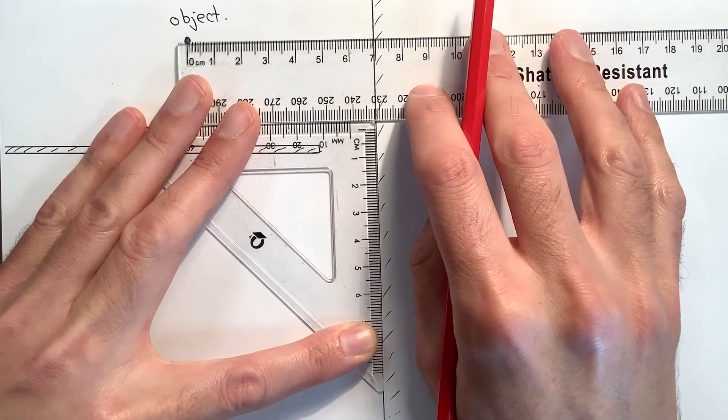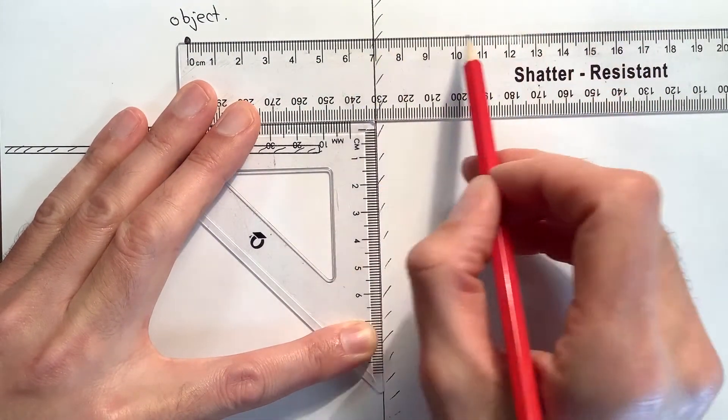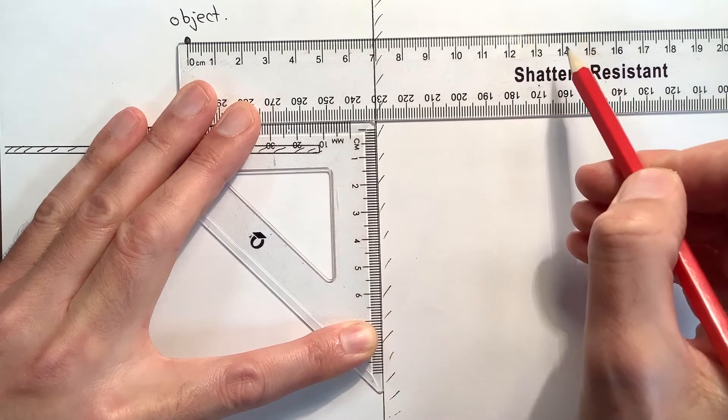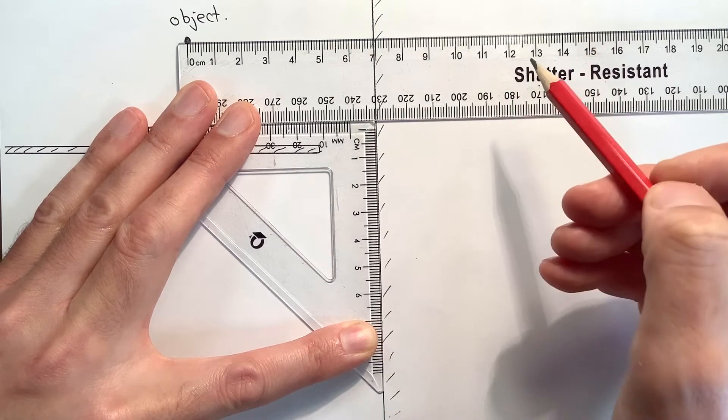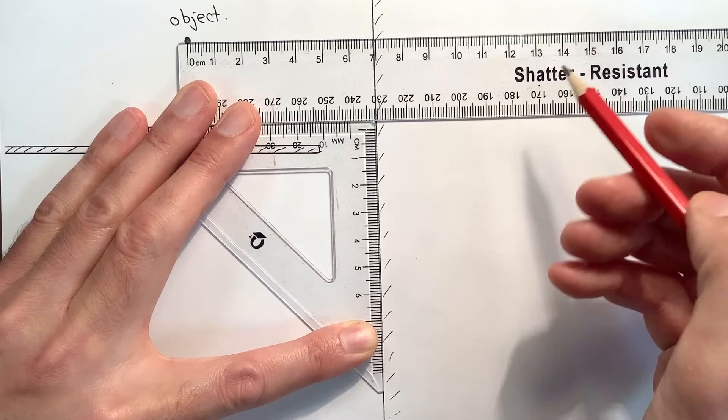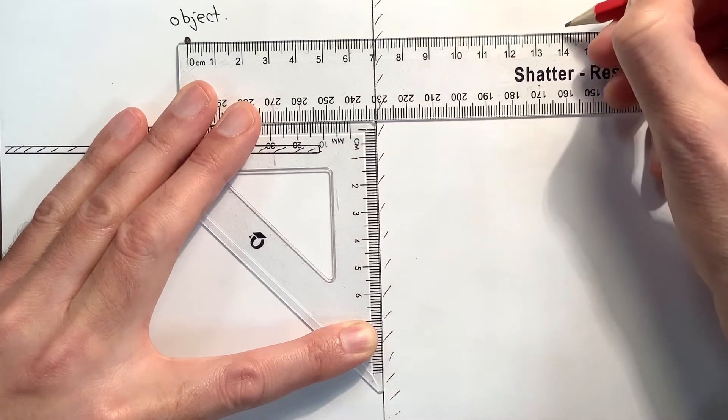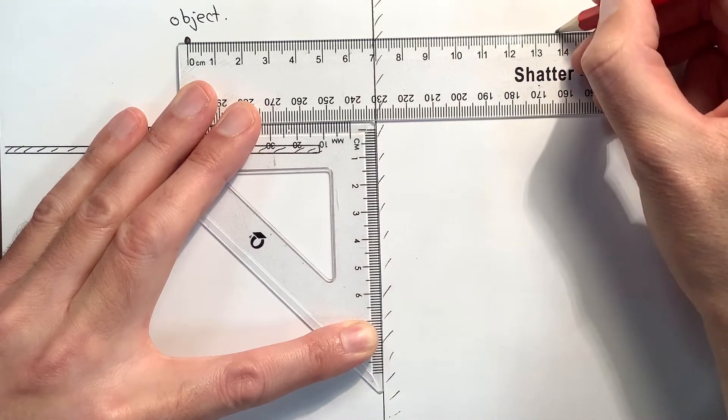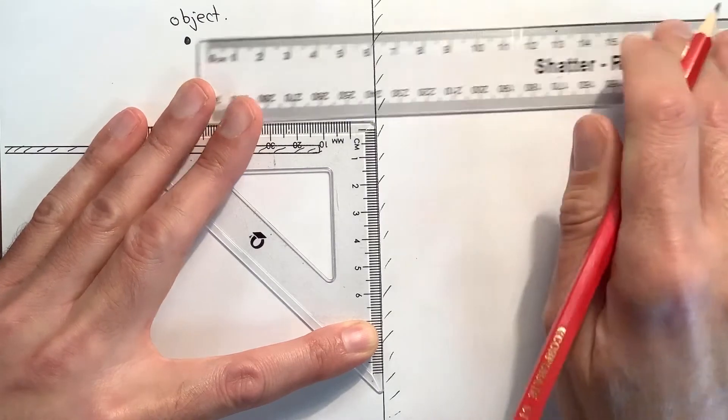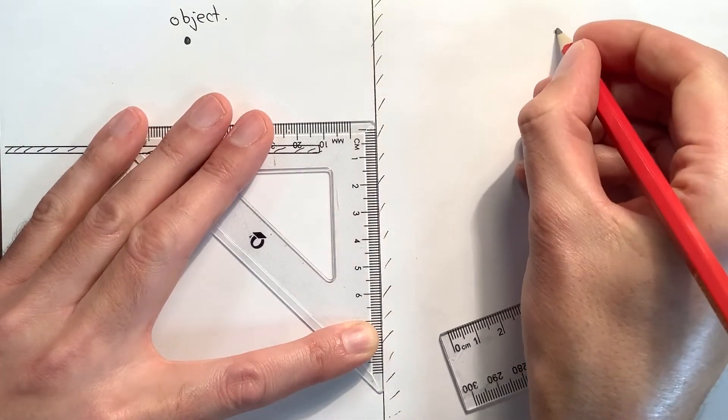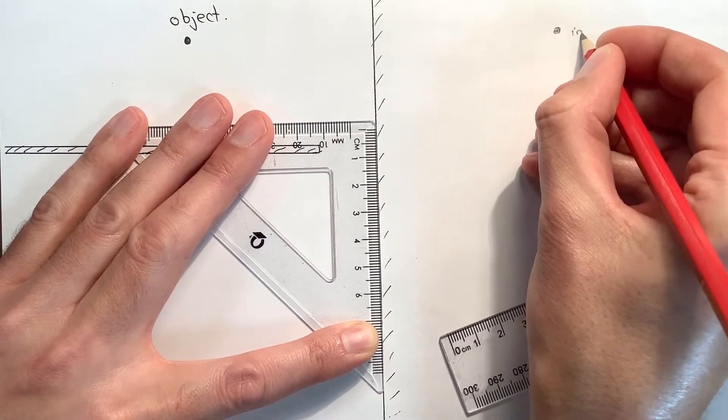So then I need to measure out a distance exactly the same behind. If I double 69, that's going to give me 138. So I know, having marked that out, that the image is going to be there.